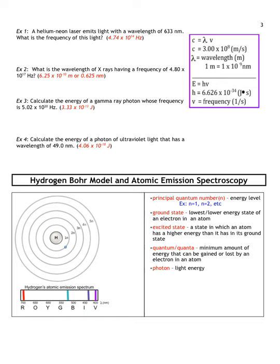To calculate wavelength, frequency, and energy, we use two key equations. The speed of light equation states: speed of light equals wavelength times frequency. The energy equation states: energy equals Planck's constant (h) times frequency. This shows the direct relationship between frequency and energy, and the inverse relationship between energy or frequency and wavelength.